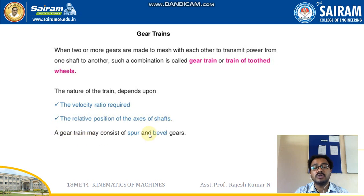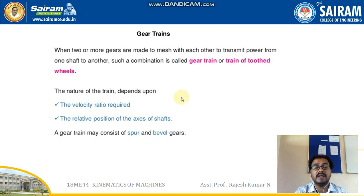A gear train may consist of spur and bevel gears. Already in the same module we have discussed how a spur gear functions and how a bevel gear works. Since we have a clear idea about spur and bevel gears, it will be easy for us to understand the velocity ratio of a spur or bevel gear and the relative position of the axis of its shaft.